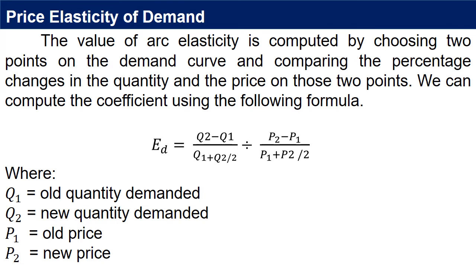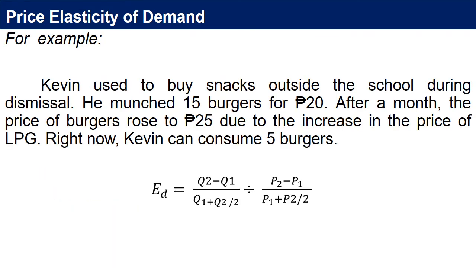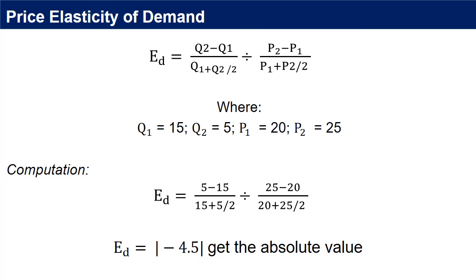The computed coefficient normally has a negative value. It signifies the inverse relationship of the quantity demanded and the price. Hence, we need to take the absolute value of the coefficient to reflect its degree of responsiveness. When the value is greater than 1, it implies that the demand is elastic since the percentage change in quantity demanded is greater than the percentage change in price. Kevin used to buy snacks outside the school during dismissal. He munched 15 burgers for 20 pesos. After a month, the price of burgers rose to 25 pesos due to the increase in the price of LPG. Right now, Kevin can consume 5 burgers. Q1 equals 15, Q2 equals 5, P1 equals 20, P2 equals 25.